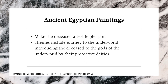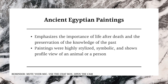Next is Ancient Egypt. Most of the paintings in Ancient Egypt reflect their religious belief. Ancient Egyptians believed in life after death, and they believed that these paintings could make the deceased's life pleasant. The themes include the Journey to the Underworld and introducing the deceased to the gods of the underworld by their protective deities. The paintings also emphasize the importance of life after death and the preservation of knowledge of the past. Paintings were highly stylized, symbolic, and show a profile view of an animal or a person.